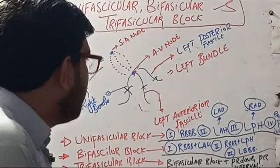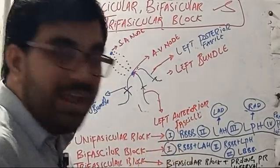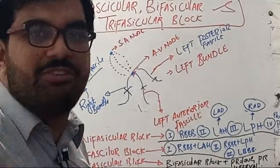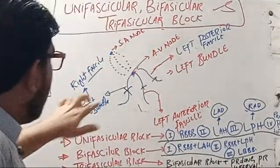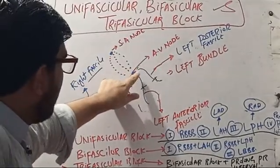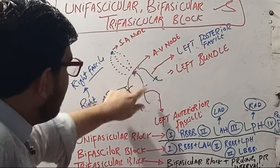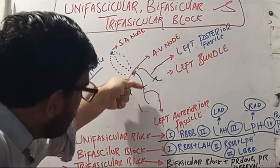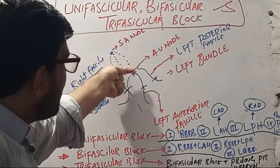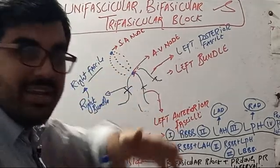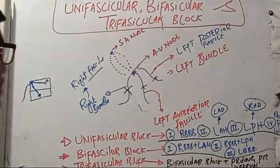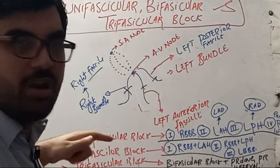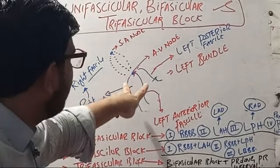If in ECG you are having only a prolonged PR interval — so for FCPS MCQ purposes — if we are having only prolonged PR interval, then it is unifascicular block. How? If this fascicle is blocked, the impulse can travel through both of the other two, but if the impulse is traveling through the AV node it gives you a prolonged PR interval.